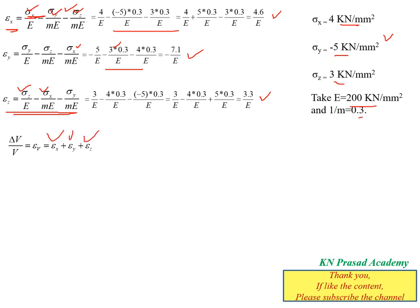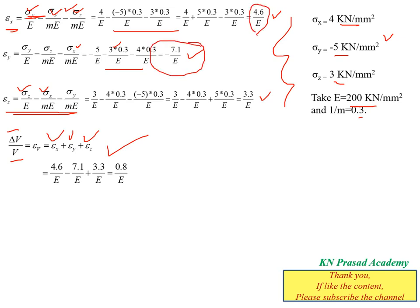Substituting the known strain values into the volumetric strain equation: δV/V = 4.6/E + (−7.1/E) + 3.3/E = 0.8/E. So the volumetric strain equation becomes δV/V = 0.8/E.